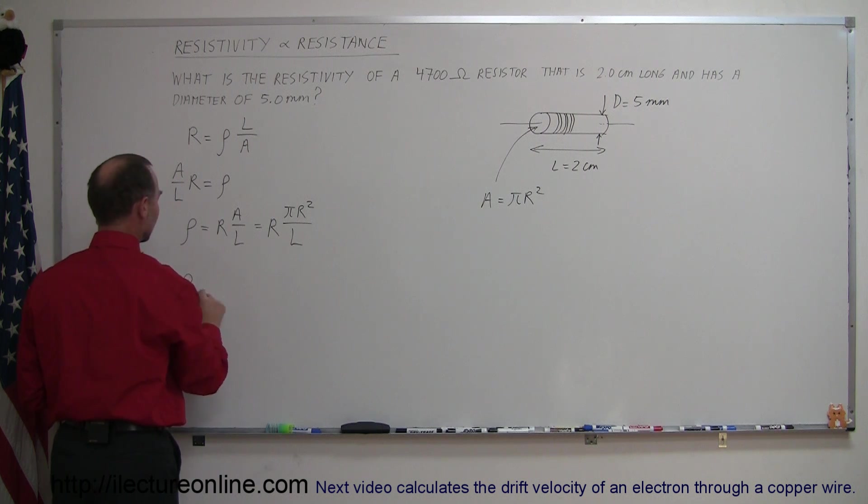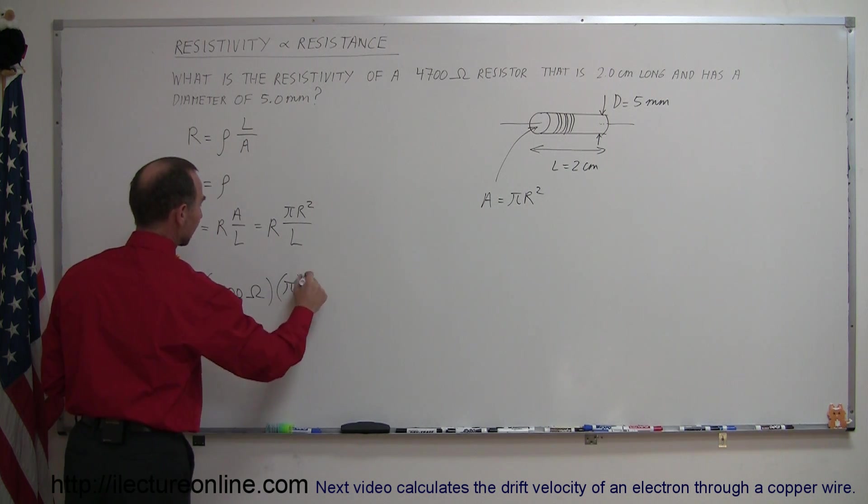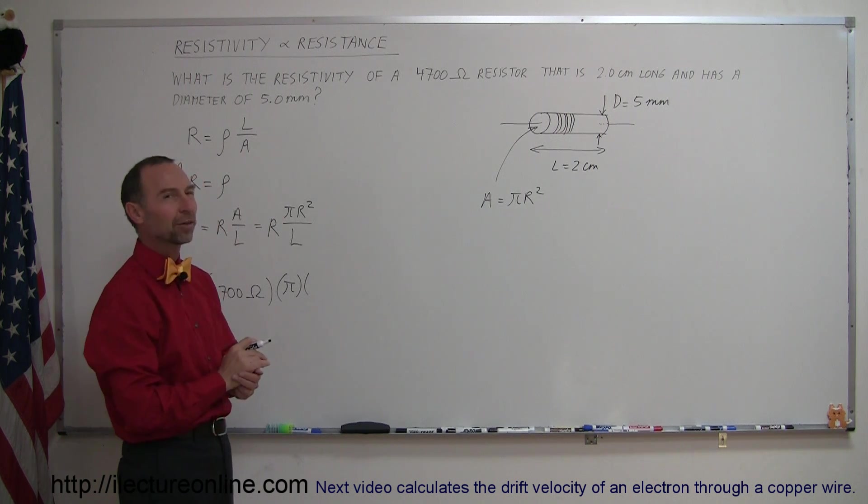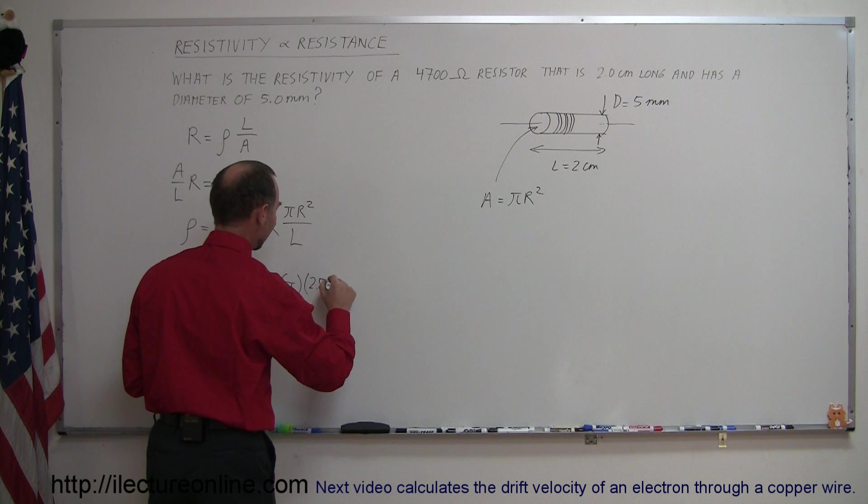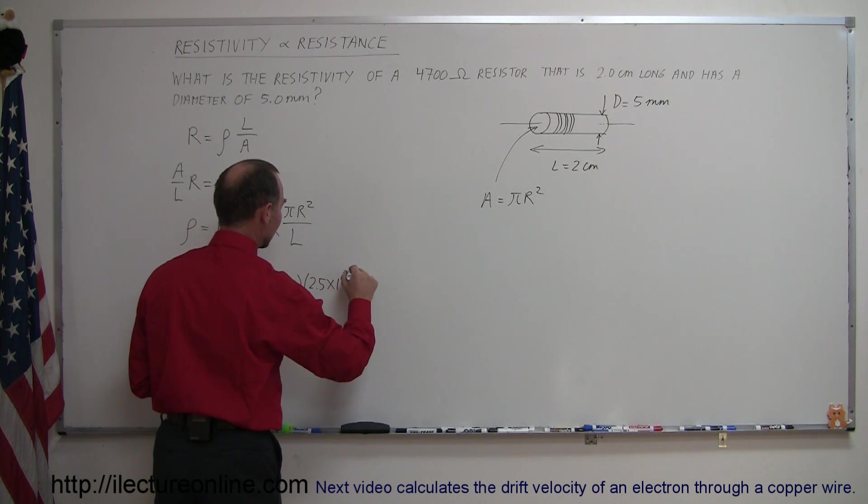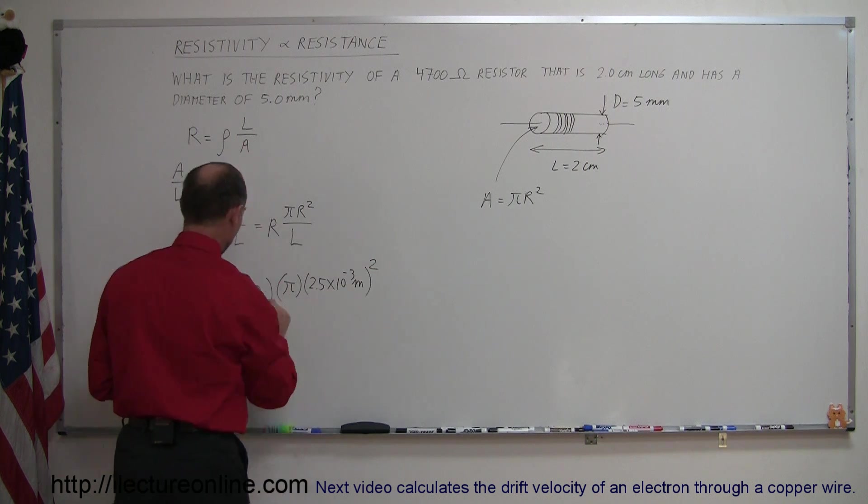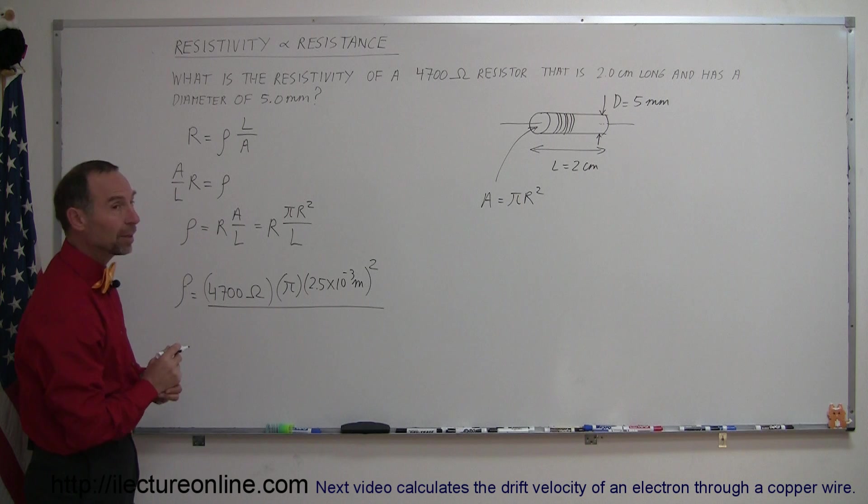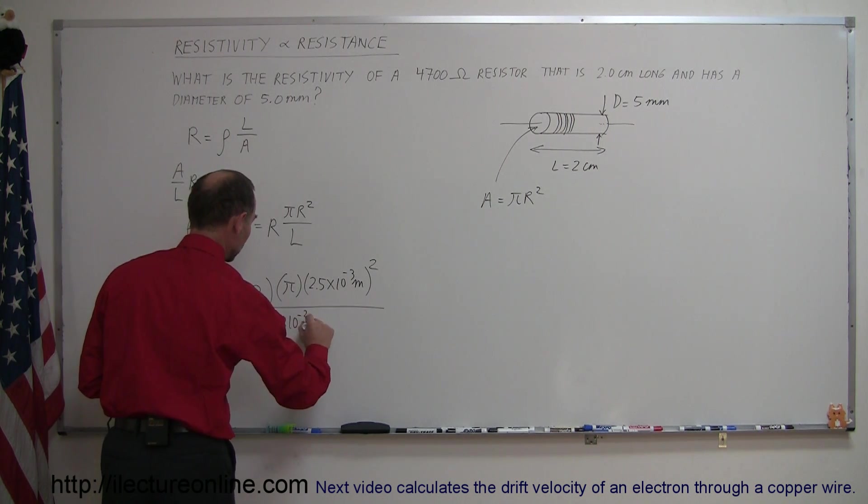So the resistivity equals 4,700 ohms times π times the radius. Now, we're given the diameter to be 5 millimeters. That means the radius is half of that, which is 2.5 millimeters, or 2.5 times 10 to the minus 3 meters. Then we have to square that amount and divide by the length. The length is 2 centimeters, which is 2 times 10 to the minus 2 meters.